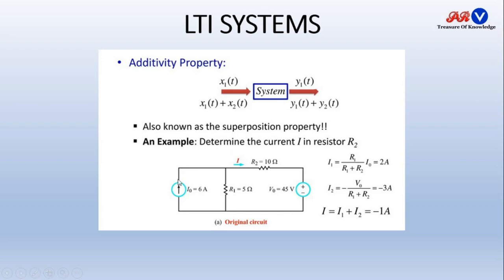An example is shown in the figure. Here we have to calculate the current through resistance R2. First, we short the voltage source and find the current I1 through the R2 branch using the current divider rule — it comes out to be 2 amperes. While calculating the response due to the 45-volt source, we open it and find the current due to that power supply as V0 / (R1 + R2), which comes out to be minus 3 amperes. So total current through R2 is 2 + (−3) = −1 ampere. This is an example of the additive property.